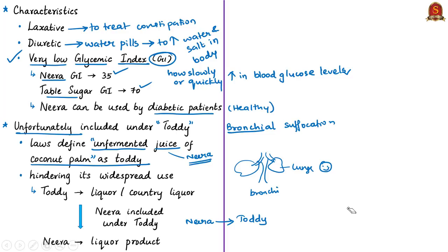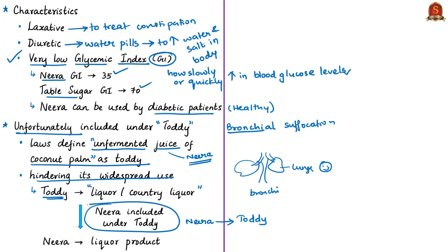These laws are a hindrance to the widespread use of Neera, because they include unfermented juice under the definition of toddy. Since toddy falls under the definition of liquor, Neera automatically gets included under liquor products. We must be clear: Neera on fermentation gets converted to toddy, and not vice versa. Both Neera and toddy are two different products — chemically and nutritionally.